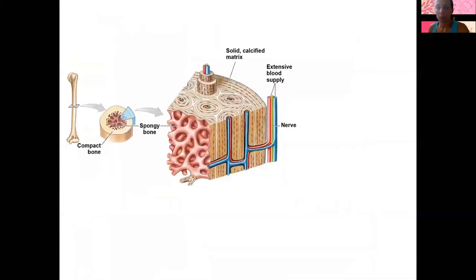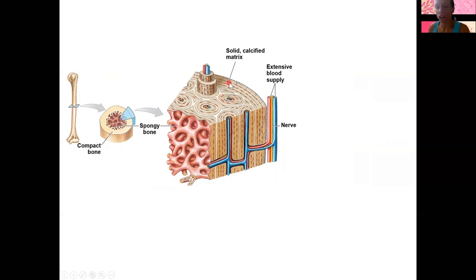Last, we have bone. Bone has a small amount of ground substance, kind of like fibrocartilage. The matrix is mostly collagen fibers as well as calcium carbonate and calcium phosphate. In a cross section of bone, the matrix is solid and calcified, and there is a blood supply. Cartilage and epithelial tissue do not have a blood supply — they're avascular. Bone actually heals fairly well because it does have a blood supply.